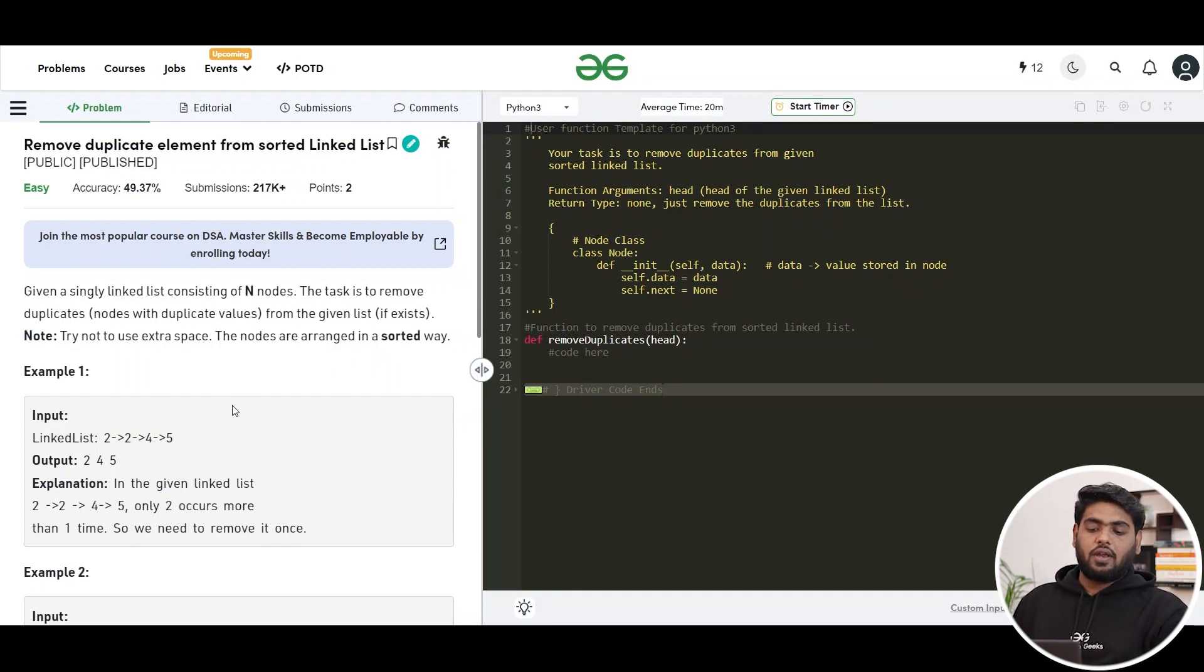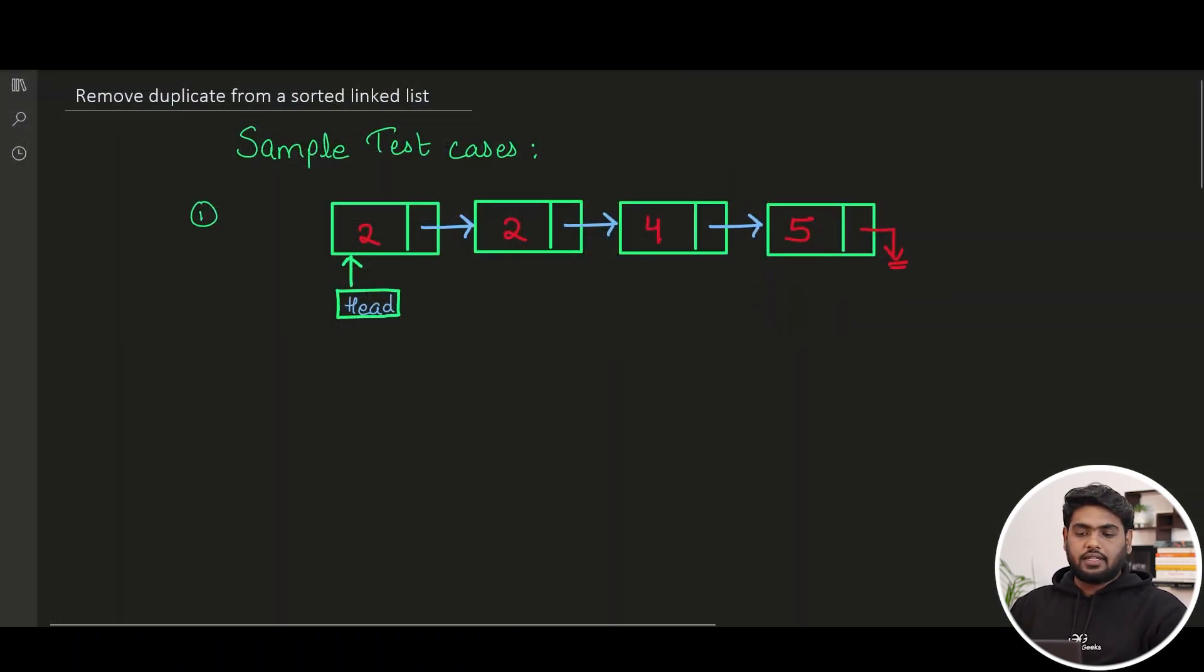So this is the first sample test case. You can see this is your given linked list and what it is asking you to do is remove all the duplicate elements. So as we can see here at a high level, these values are being repeated right?